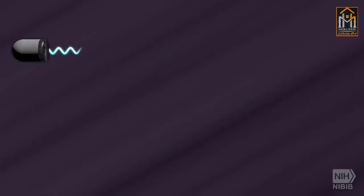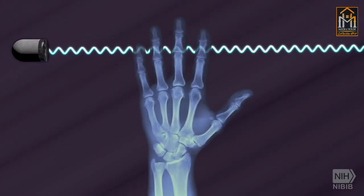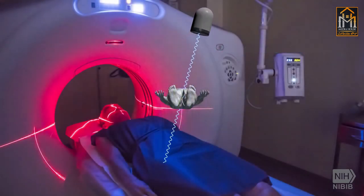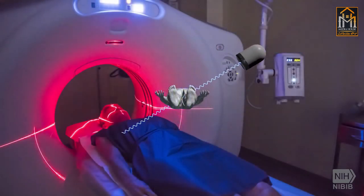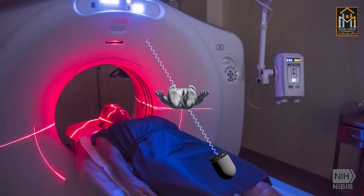ಸಾಮಾನ್ಯ X-ray ಲ್ಲಿ ಕಿರಣಗಳನ್ನು ಒಂದೇ ದಿಕ್ಕಿನಲ್ಲಿ ಹಾಯಿಸಲಾಗುತ್ತದೆ. ಆದರೆ CT Scan ಲ್ಲಿ ತಿರುಗು ತಿರುವಾ ಸಲಕರಣೆಯ ಮೂಲಕ ಹಲವು ದಿಕ್ಕುಗಳಿಂದ ಕಿರಣಗಳನ್ನು ರೋಗಿಯ ಮೇಲೆ ಹಾಯಿಸಲಾಗುತ್ತದೆ.